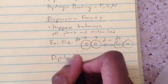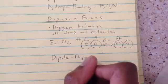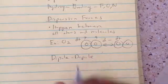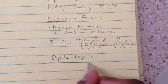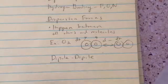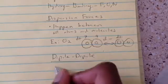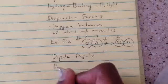Moving on to the next one: dipole-dipole. Dipole-dipole bonds are between polar molecules. So you have polar molecules interacting with each other.